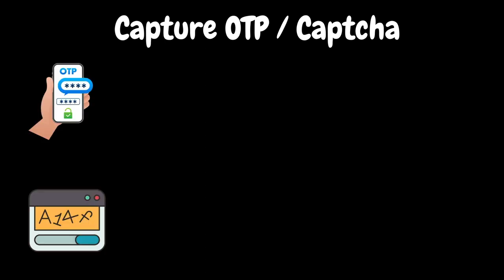Before we discuss that process, let's understand OTP and CAPTCHA. OTP is a temporary single-use code that can be delivered through a secure channel — SMS, email, or mobile app. CAPTCHA presents challenges or puzzles that are easy for humans to solve.